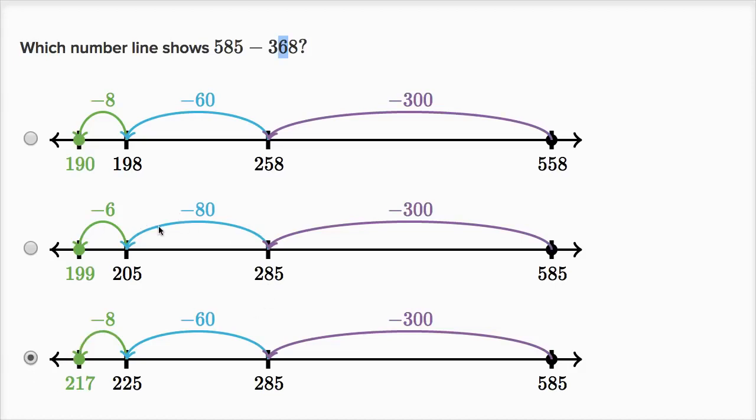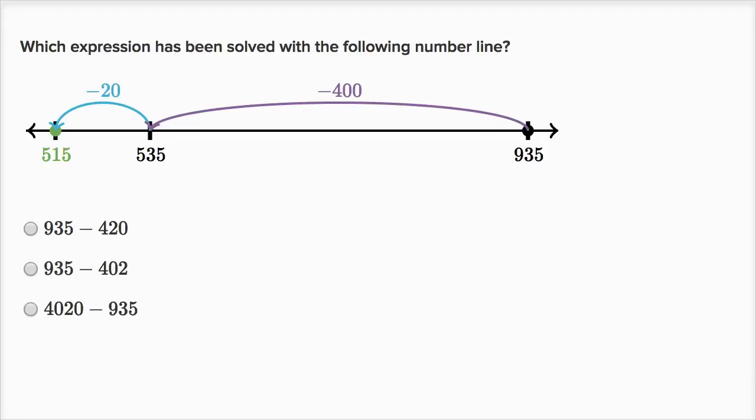This one swaps them. Instead of having six tens and eight ones, it has eight tens and six ones. This is subtracting 386, which isn't the original problem, so I definitely like this third choice. Let's do one more example.